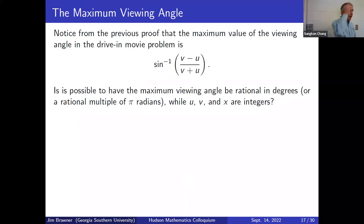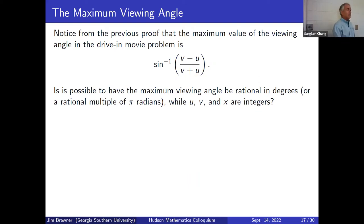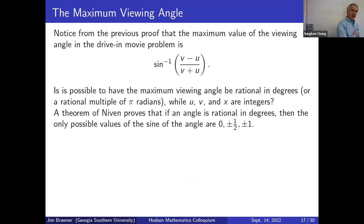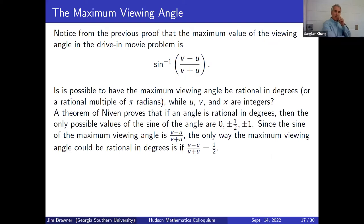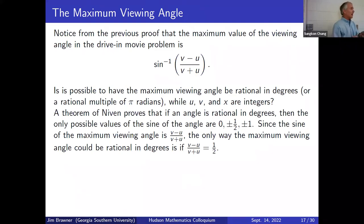By a theorem of number theorist Ivan Niven, if an angle is rational in degrees, then the only possible values of its sine are 0, ±1/2, and ±1. Since our viewing angle is acute (strictly between 0 and π/2), that restricts us to sin = 1/2, meaning the angle must be π/6. Setting (v−u)/(v+u) = 1/2 and cross-multiplying gives v = 3u.